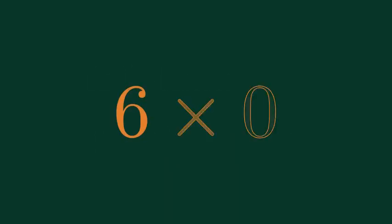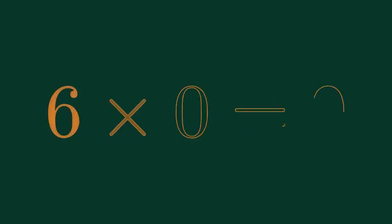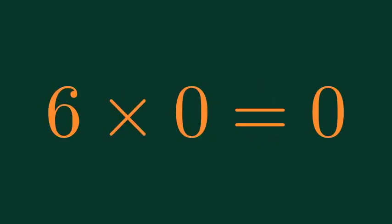What is 6 times 0? 6 times 0 is equal to 0.